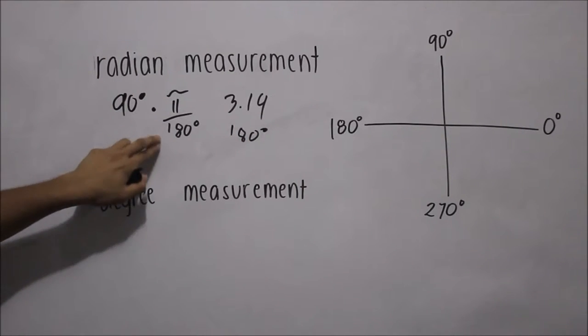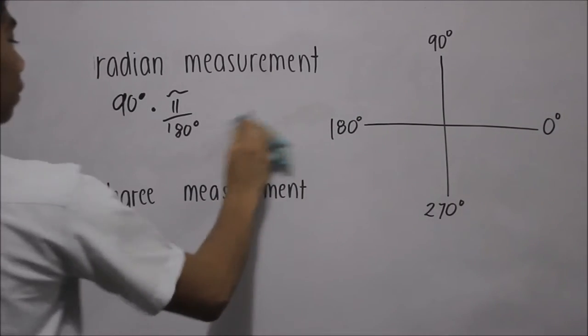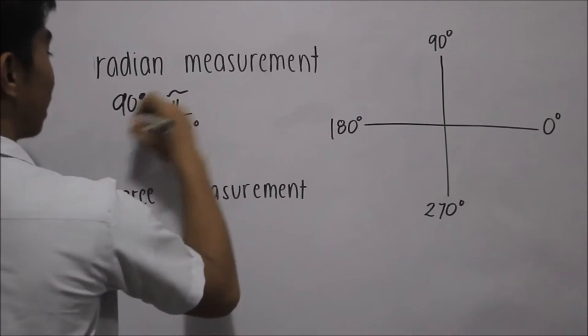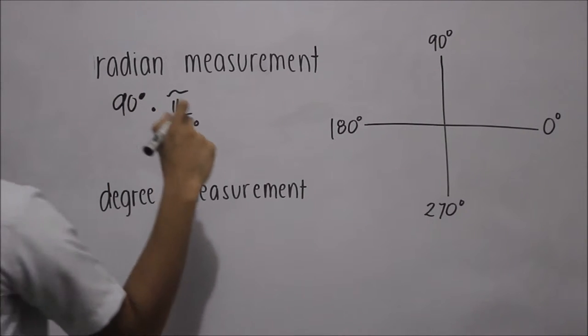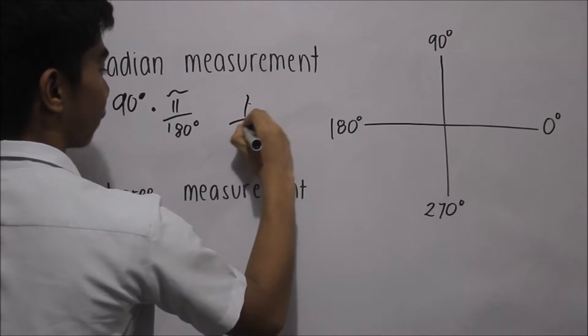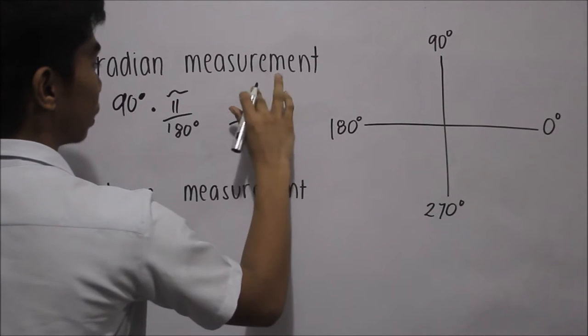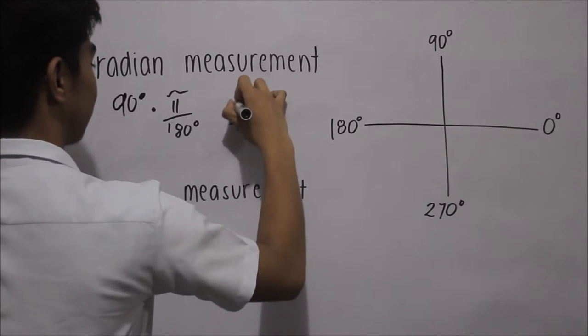So therefore, it is only equal to 1. 90 divided by 180 is 1 half times pi. Therefore, 90 degrees in radiant measurement is equal to pi over 2.